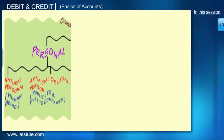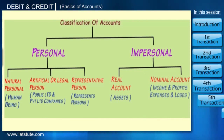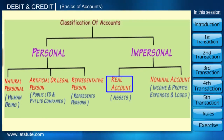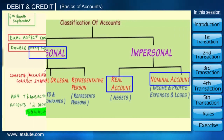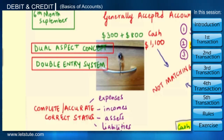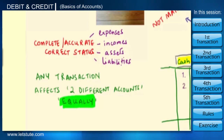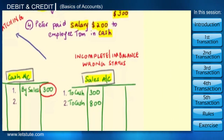Hello friends. In our previous session we have seen how all the accounts are classified into real, personal, and nominal accounts. We also have an idea about the dual aspect concept or the double entry system of accounting, which states that every transaction has two equal effects. Without recording both the effects or dual effects in books of accounts, our record will be incomplete.